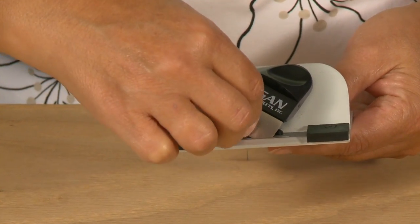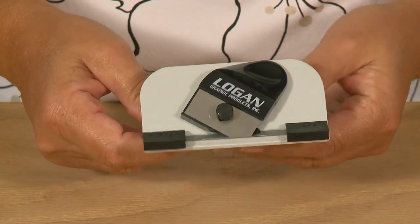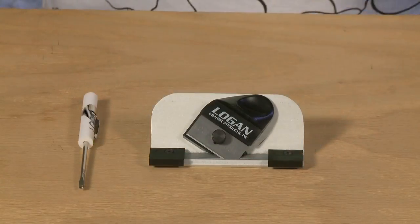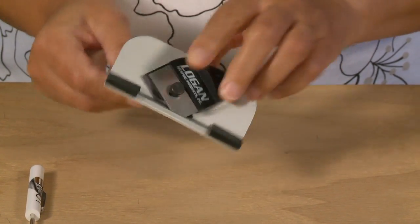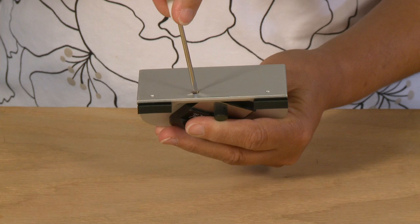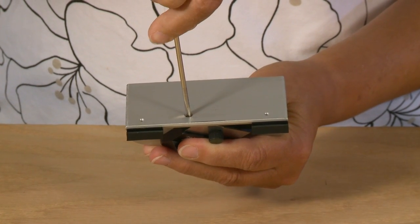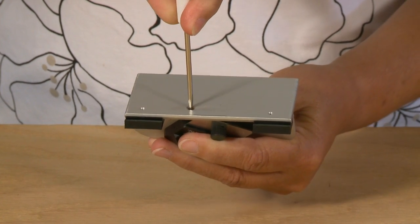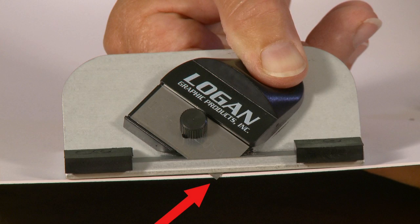To adjust the blade depth on the 302 bevel cutter, find the blade depth adjustment screw on the bottom of the cutting head. Using a screwdriver, turn the screw clockwise to decrease the blade depth or counterclockwise to increase the blade depth. Make sure that the blade depth is set so the blade barely passes through the mat board and only scores into the slip sheet.